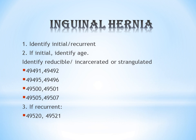For recurrent inguinal hernia, age does not need to be considered — there are only two codes regardless of age: 49520 for reducible and 49521 for incarcerated or strangulated.